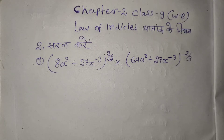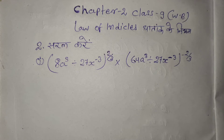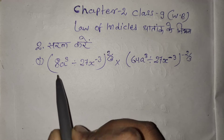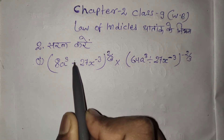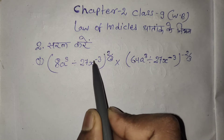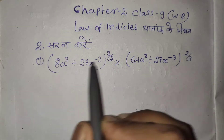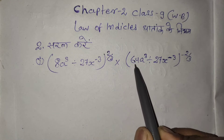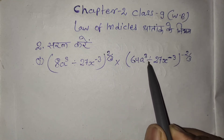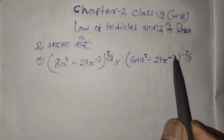Welcome to SM Learning Paths. Class 9, Maths Chapter 2, Law of Indices. We will solve two numbers. First, let's see one question: 8a³ divided by 27x⁻³, raised to the power 2/3.